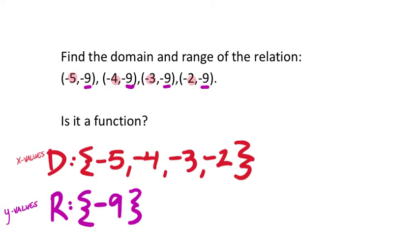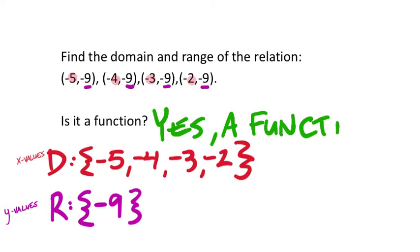Is this a function? The y values are repeating, but remember — we don't care about what comes out of the machine. Putting in negative 5 always gives negative 9, same for negative 4, negative 3, and negative 2. This is a function — yes. Students often get this wrong by saying it's not a function because of repeating y values. That doesn't matter.